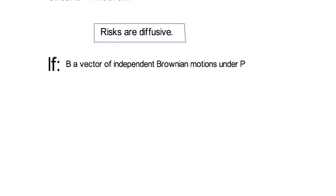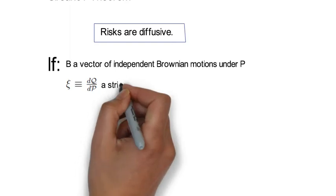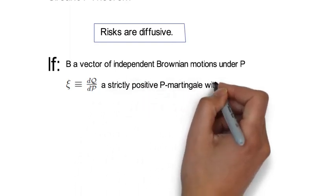the Radon-Nikodym derivative ξ, defined as dQ over dP, is a strictly positive P-martingale with dξ over ξ being equal to minus λ transpose dB, where λ is the vector of expected market prices of risk,